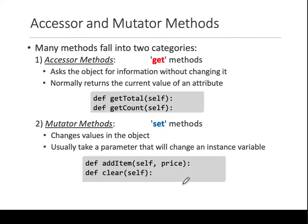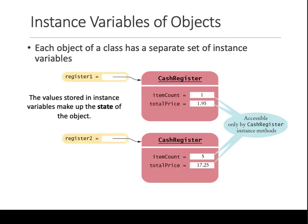If you create register_two equals cash register, each object has its own set of instance variables — meaning the same variable names are stored in different memory locations. Only this object has its particular value, while the other object has another value, and so on.